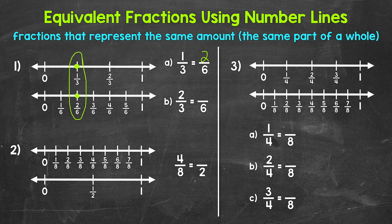Moving on to B, we have two thirds is equivalent to how many sixths? Two thirds is right here. Right below, we can see that four sixths is at the same place on the number line. Two thirds and four sixths are equivalent fractions.